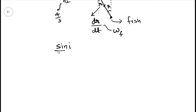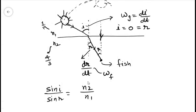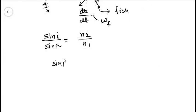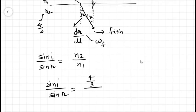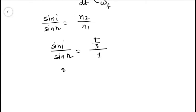Snell's law says that sin i over sin r equals to n2 over n1 because the light ray is going from n1 to n2. So putting the value, sin i over sin r will be equals to n2 is 4 by 3 and n1 is 1. So simplifying this, sin i equals to 4 over 3 sin r.